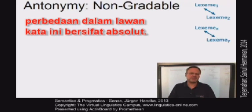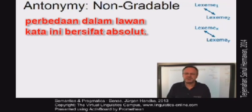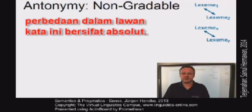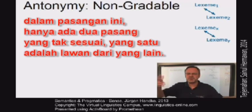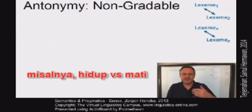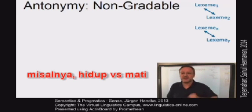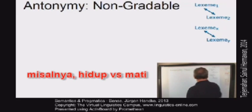A second type of antonyms is referred to as non-gradable or binary antonyms. This type of antonyms differs from gradable antonyms in that the opposition is absolute. There are just two incompatible terms in the set. One is the opposite of the other.